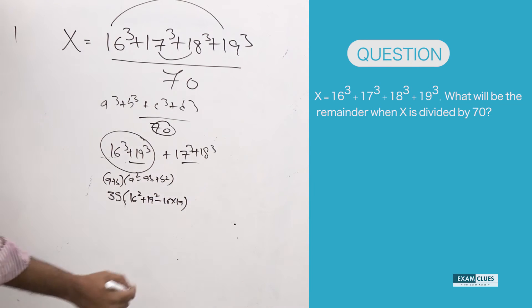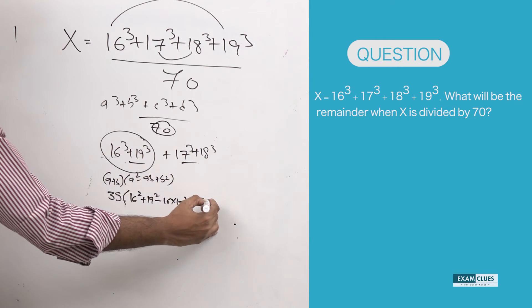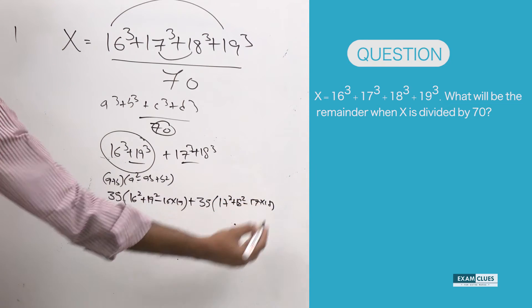That means 35 into 16 square plus 19 square minus 16 into 19. I am not going to calculate anything here, but I am just writing for the sake of your understanding. Then again, 17 plus 18, 35 into 17 square plus 18 square minus 17 into 18.